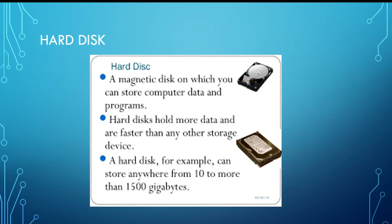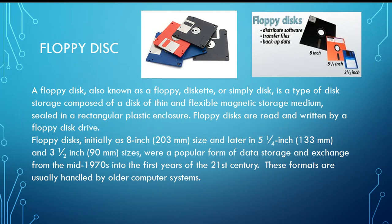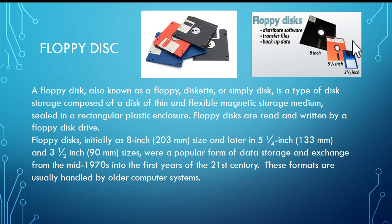What are floppy disks? A floppy disk, also known as a floppy diskette or simply disk, is a type of disk storage composed of a disk of thin and flexible magnetic storage medium sealed in a rectangular plastic enclosure. Floppy disks are read and written by a floppy disk drive. As shown in this image, floppy disks are available in various sizes: eight inch, five and a quarter inch, and three and a half inch.